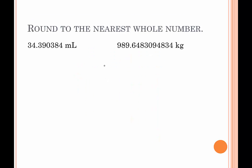We want to round to the nearest whole number — that means we're not going to include a decimal. We have 34.390384 milliliters. The critical digit will be the tenths place — here's the critical digit, which is 3. Basically, 34-point-something is in between 34 and 35, and 34.3 will be closer to 34. So when rounding to the nearest whole number, this would be 34 milliliters.